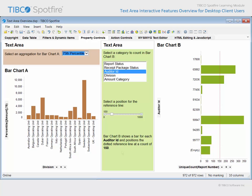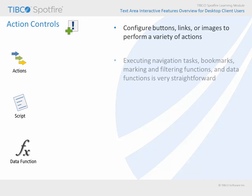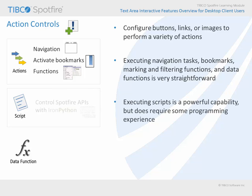In addition to property controls, a user may encounter action controls configured within a text area. Action controls are buttons, links, or images which are configured to perform a variety of actions. Some of these configurations are straightforward menu-driven options where absolutely no programming skills are required. Others do require some code writing or at least some code editing skills. However, the payoff is the capability to implement the vast array of automation APIs provided by Spotfire as custom controls within text areas. In either case, the goal, again, is to make it easier for you to perform routine analysis chores.